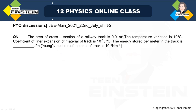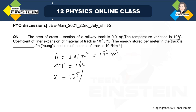Now this question says: the area of cross-section of a railway track is 0.01 m² (10⁻² m²). The temperature variation is ΔT = 10°C. The coefficient of linear expansion α = 10⁻⁵ per degree Celsius. Find the energy stored per meter in the track. You have to remember the formula for elastic energy stored.